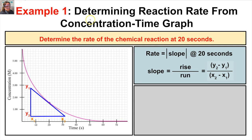In the example, we want to determine the rate of a second order chemical reaction at 20 seconds. We have a graph with concentration on the y-axis and time on the x-axis. To find the rate at 20 seconds, we go to 20 seconds on the x-axis, move up to the curve of our second order reaction, and mark a point. We then need to figure out the rate of the reaction at that point on the graph.